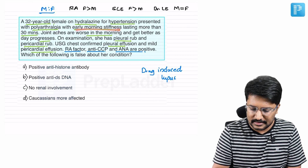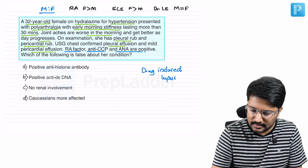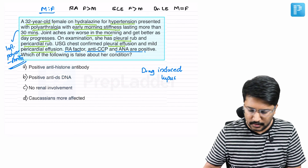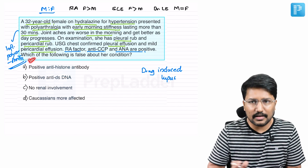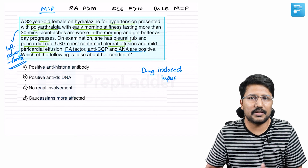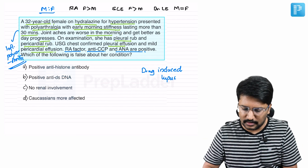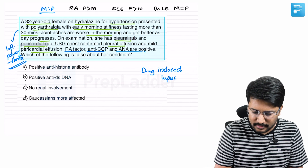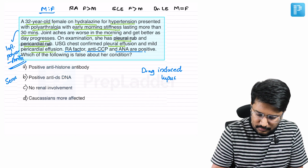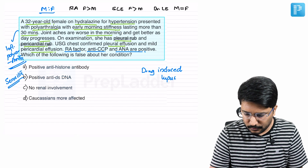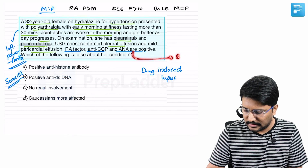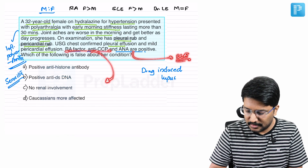This patient's main presenting complaint is polyarthralgia with early morning stiffness lasting more than 30 minutes, which is suggestive of inflammatory polyarthritis — definitely a rheumatological disorder. On examination, the patient has pleural rub and pericardial rub, indicating serositis. This further confirms a rheumatological disease. Then RA factor, anti-CCP, and ANA are all positive; when ANA is positive, one thinks of SLE, and when RA and anti-CCP are positive, one thinks of rheumatoid arthritis.